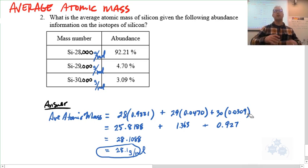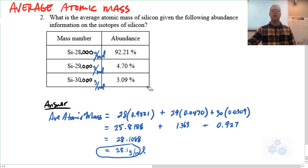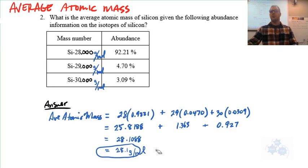And again, the abundance is just what percentage of all silicon atoms would this isotope be? And so it's just a weighted average, just a mathematical weighted average. So when you add up all of these parts, you get an average atomic mass, and with three sig figs, 28.1 grams would be your answer for this one. So mass times relative abundance.